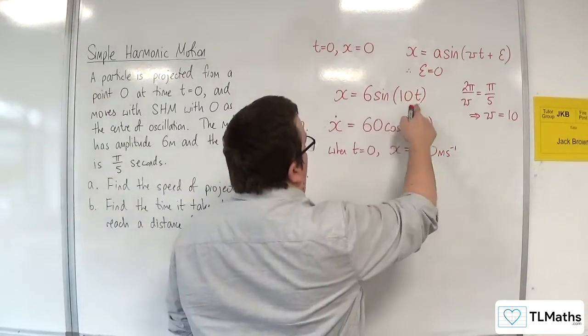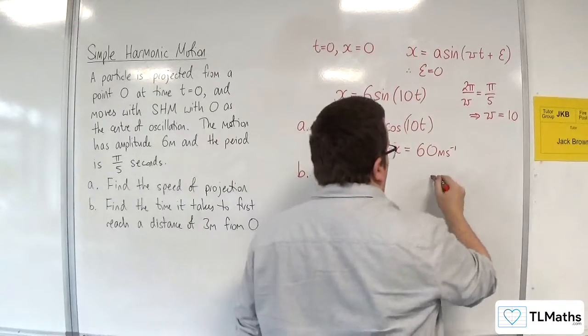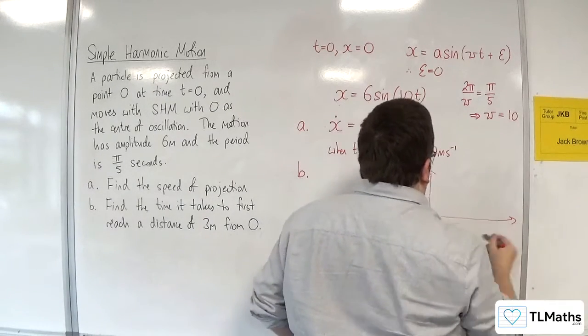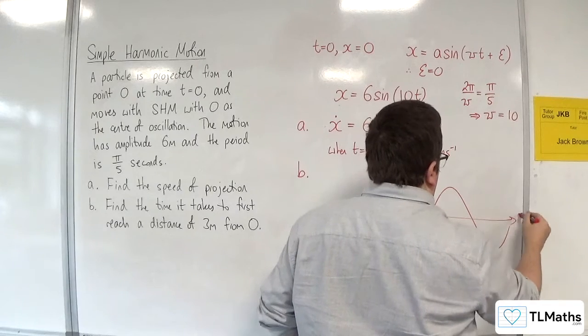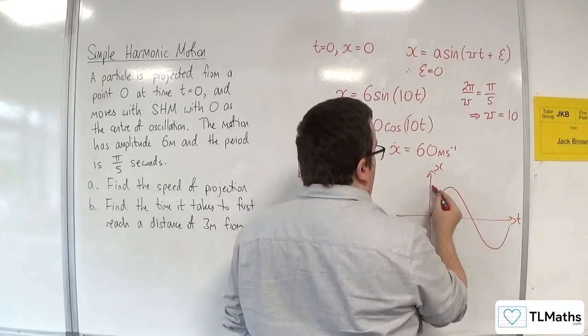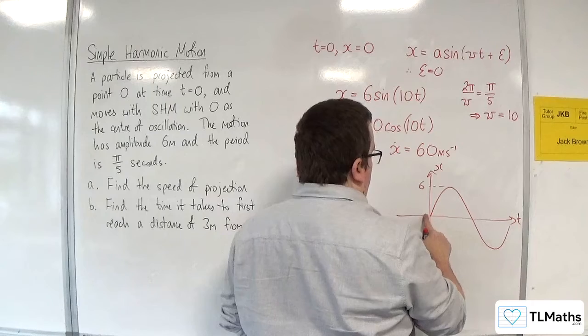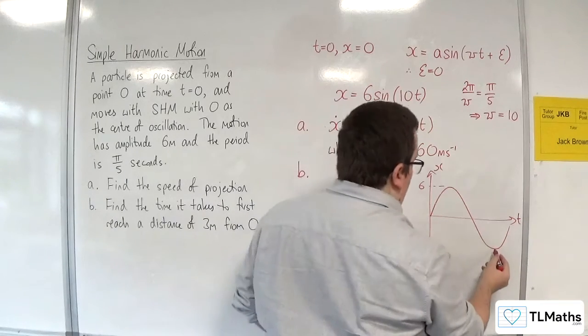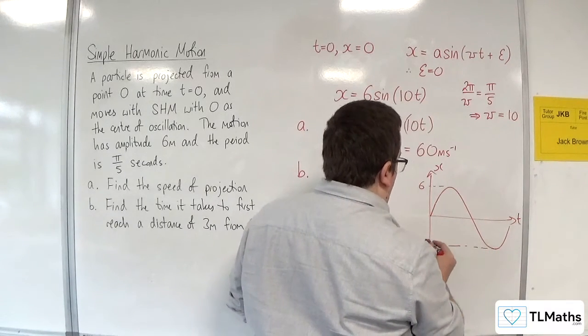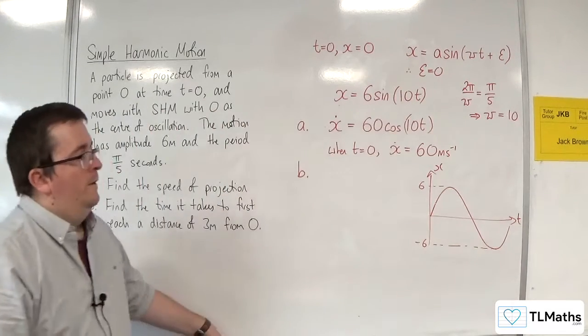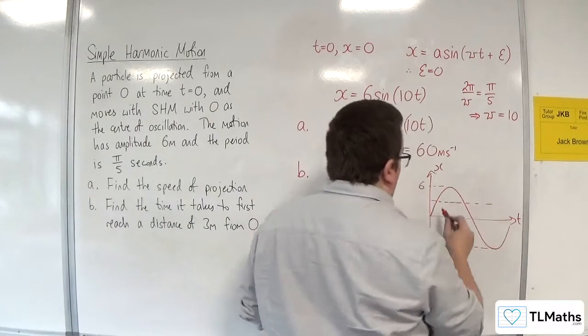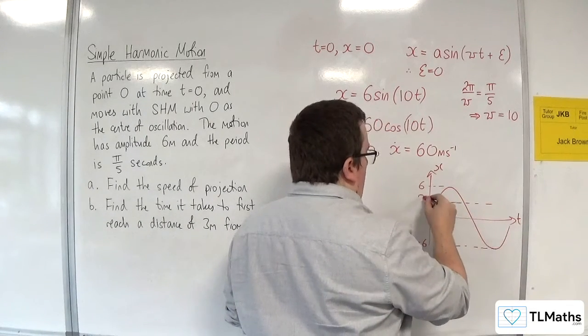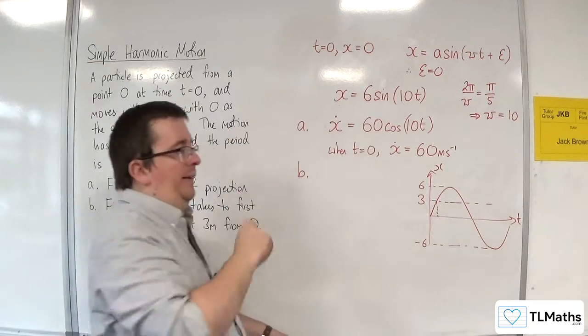So we know that this is going to look something like that. Well that's t, this is x, and this is 6, so let's just look at that, and that's minus 6. So I'm interested in the time at which x is 3.